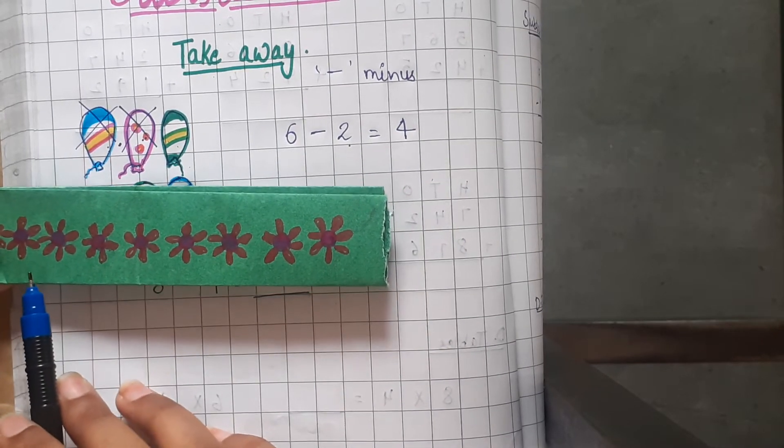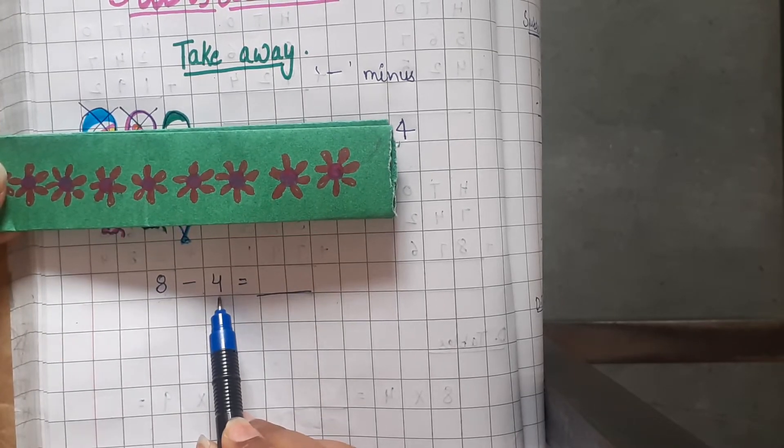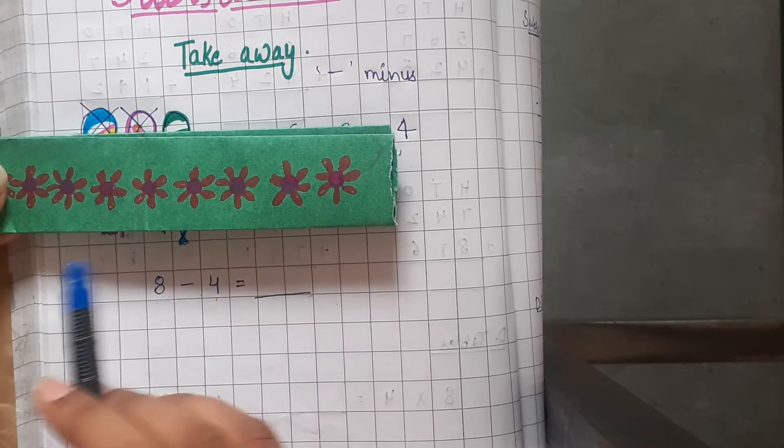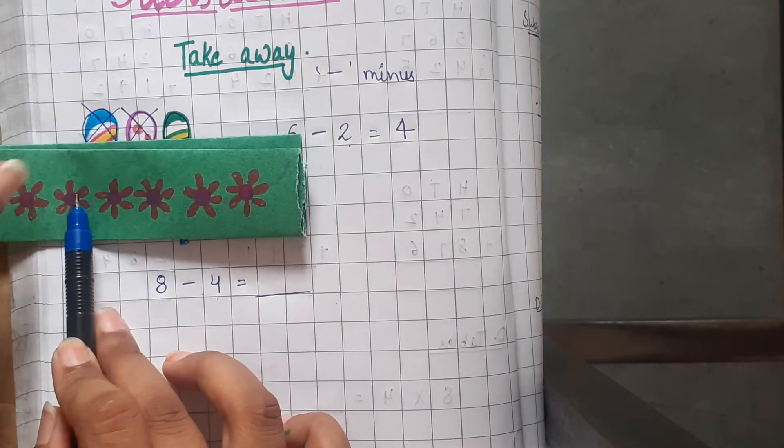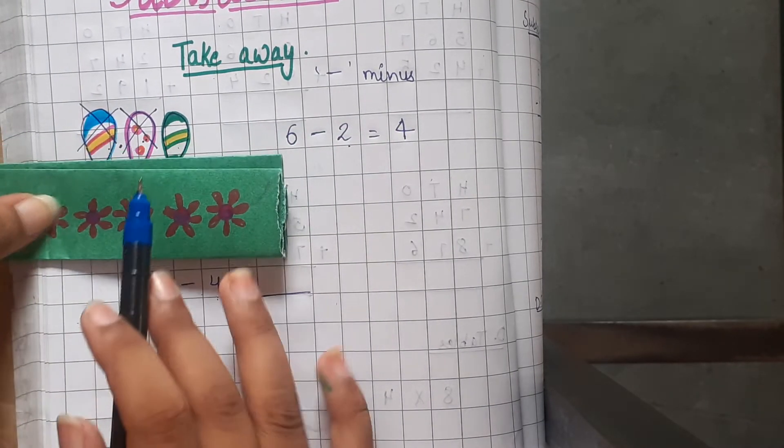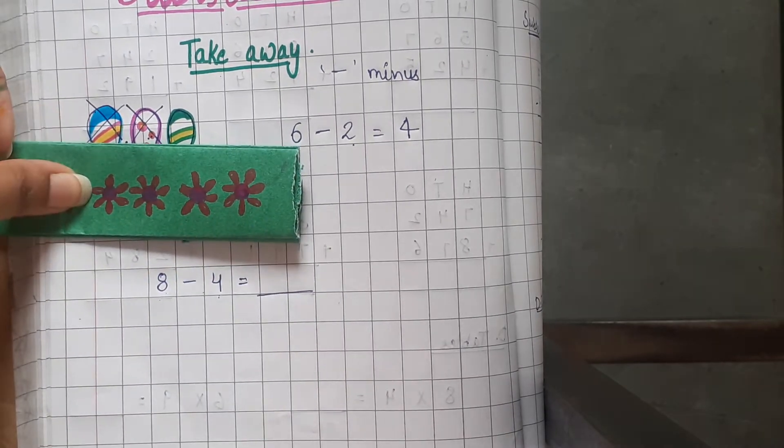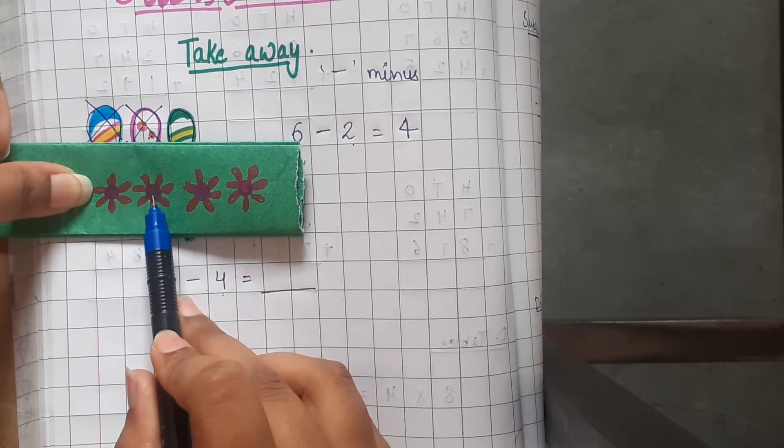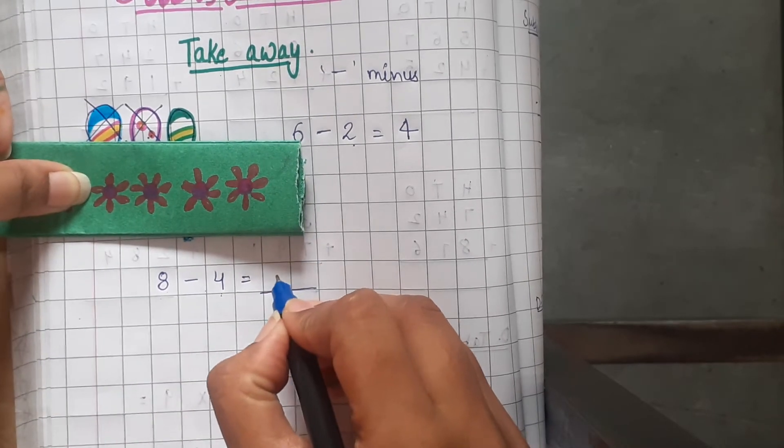Out of these 8 flowers, we have to remove 4. We have to take away 4 flowers. So 1, 2, 3, 4. 4 flowers we took away. So let us see how many flowers are left: 1, 2, 3, 4. 4 flowers are left. Isn't it easy?